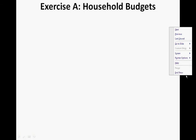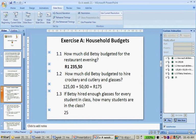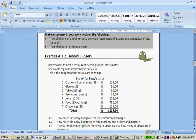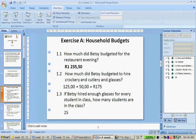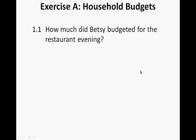Now here is the memo for Exercise A on household budgets. How much did Betsy budget for the restaurant evening? The answer is 1,235 rand and 50 cents.